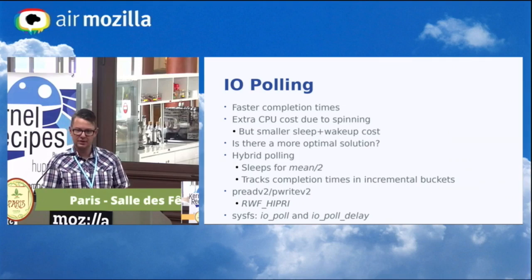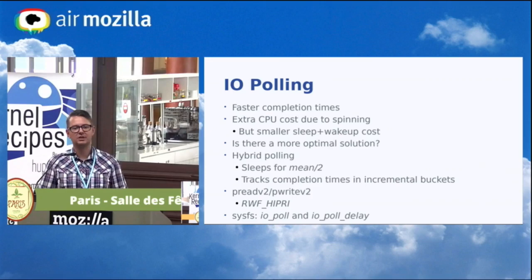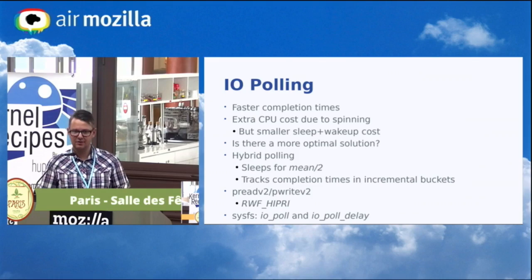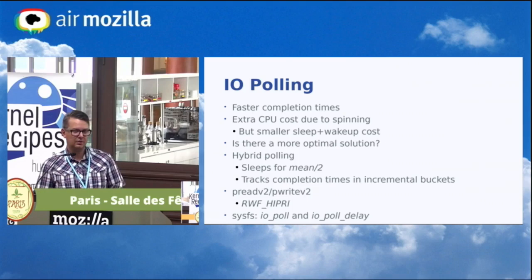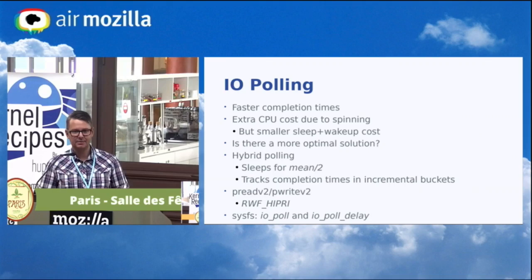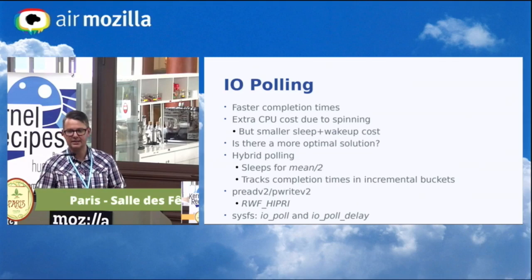To use polling, you can use the new pwritev2 and preadv2 system calls, which have a flags argument — if you set the HIPRI flag and you're doing O_DIRECT IO, you get polling. There are two sysfs files on the device side: io_poll, which enables or disables polling; and io_poll_delay, which defaults to -1 (classic polling). Setting it to 0 enables hybrid polling; setting it to a positive number forces a specific delay — for example, writing 3 makes the kernel sleep for 3 microseconds instead of doing automatic calculations.